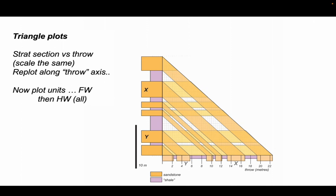Now we can plot all our various units in the same way, just as simple diagonals completing the triangle plot. Where the color intensity is greatest, these are places where there's sand-on-sand juxtaposition.